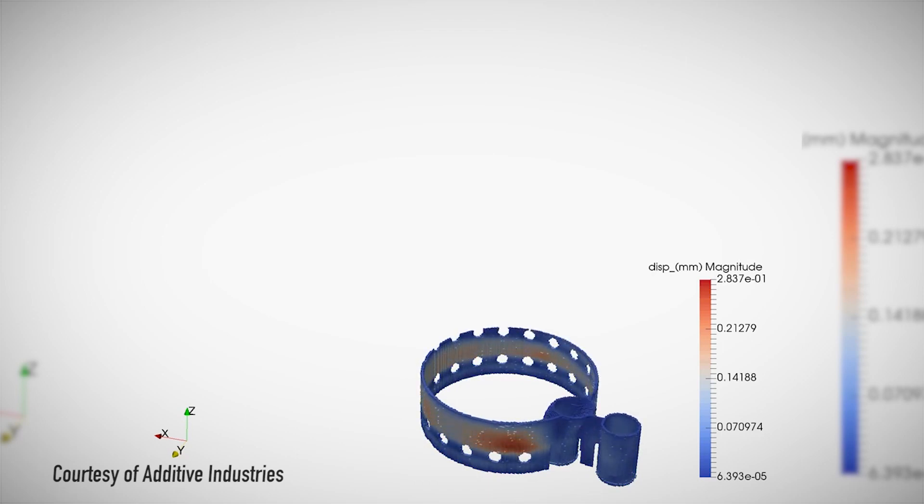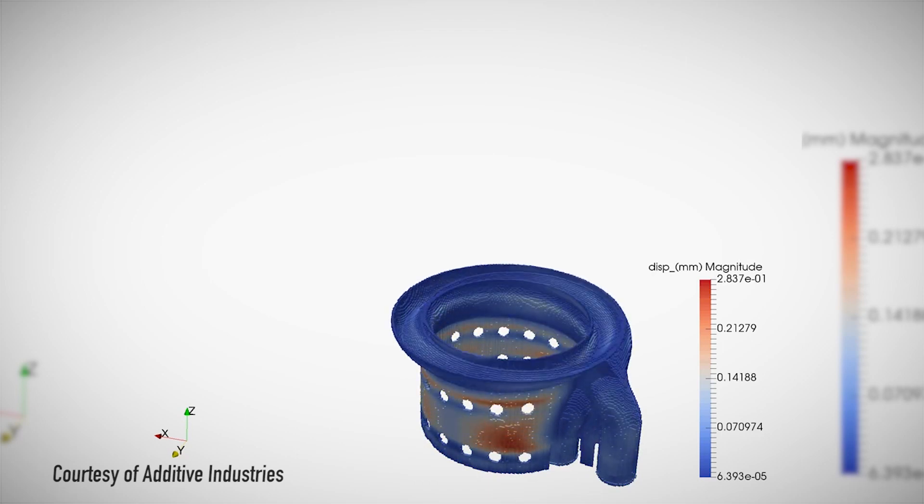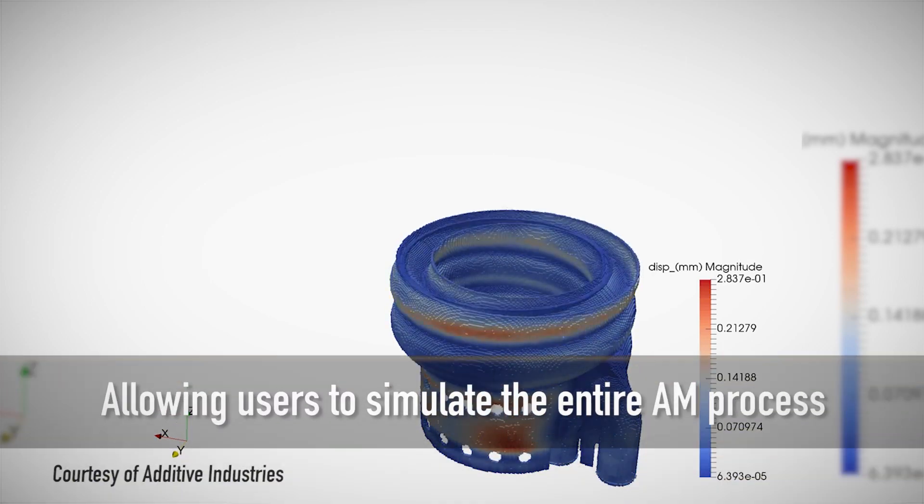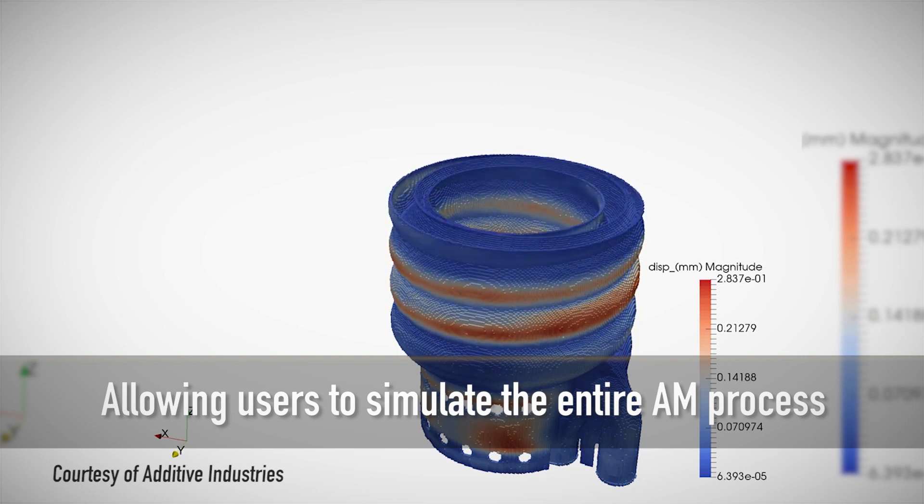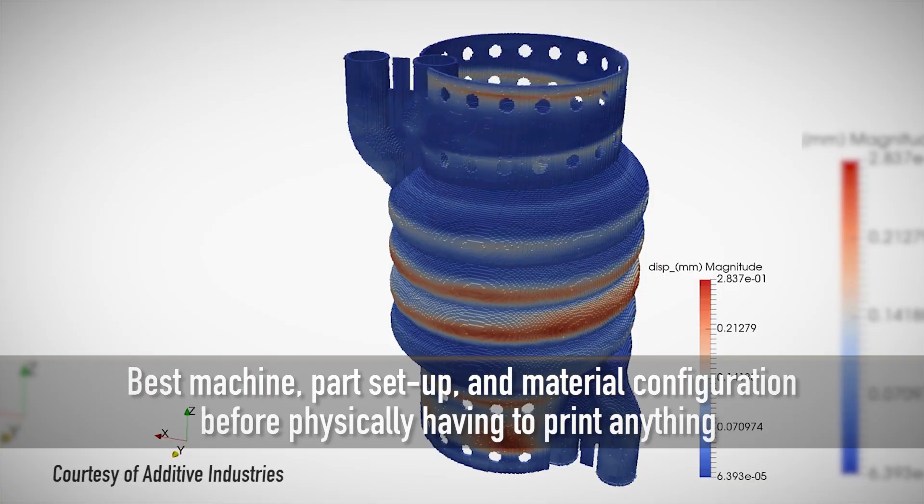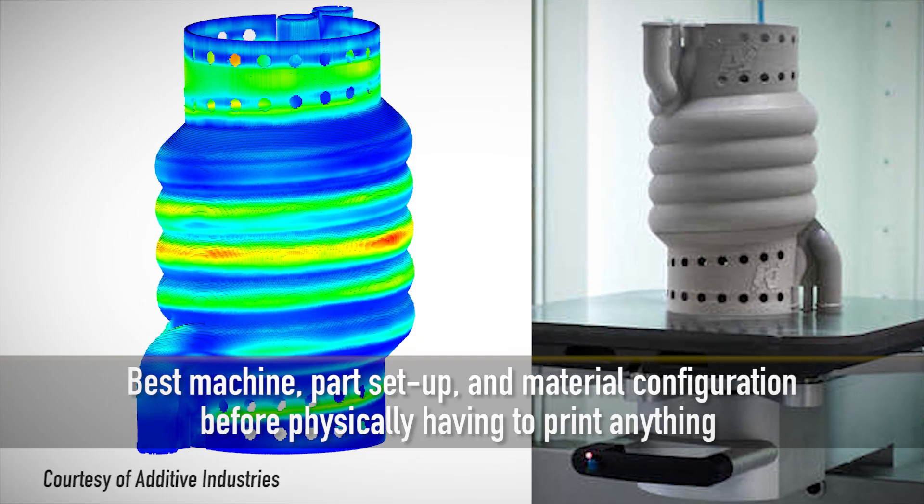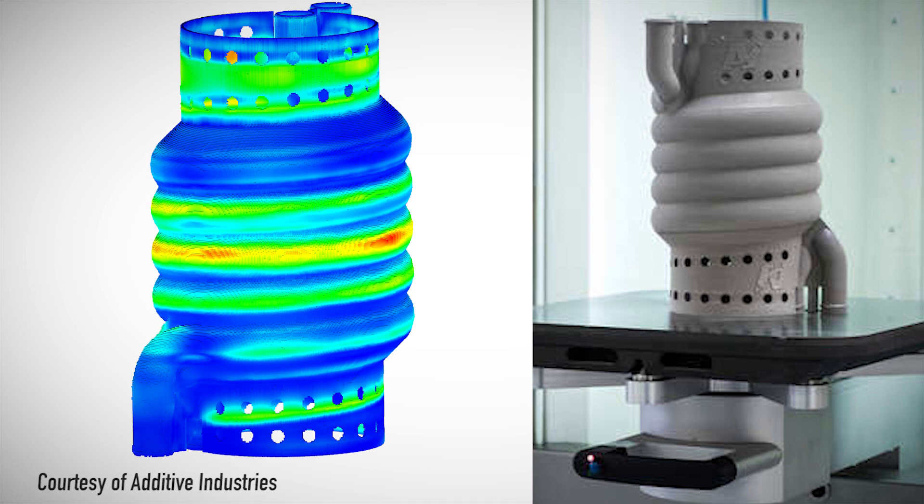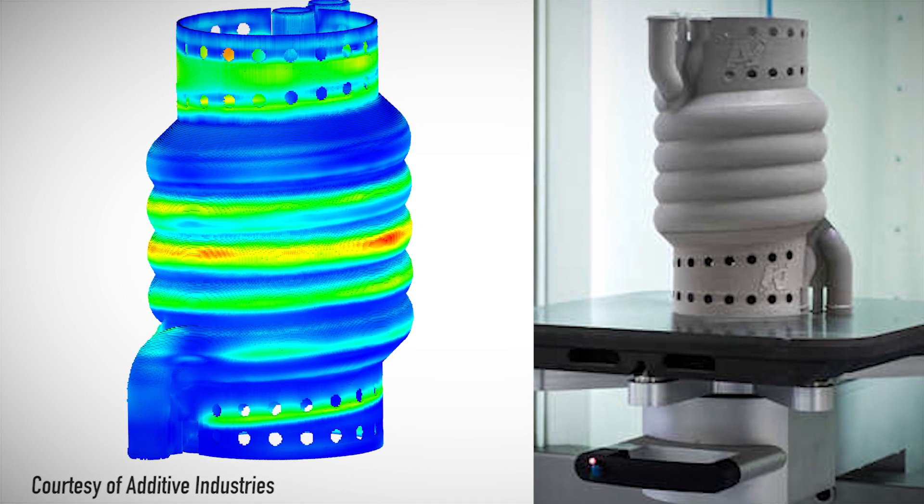ANSYS offers the most complete and powerful AM simulation solution, allowing users to simulate the entire AM process and determine the best machine, parts setup, and material configuration before physically having to print anything, thus greatly reducing and potentially eliminating physical trial and error.